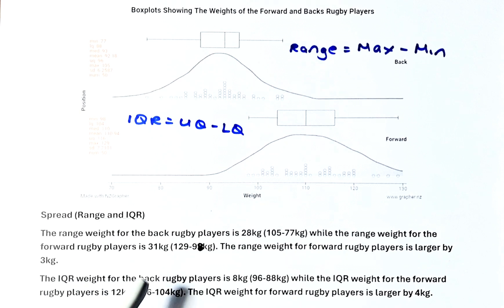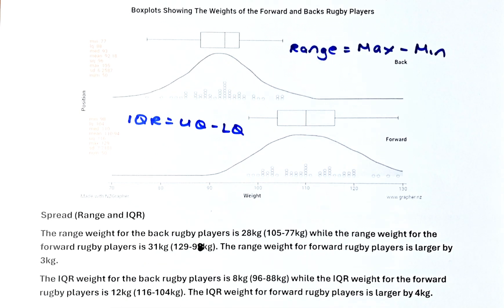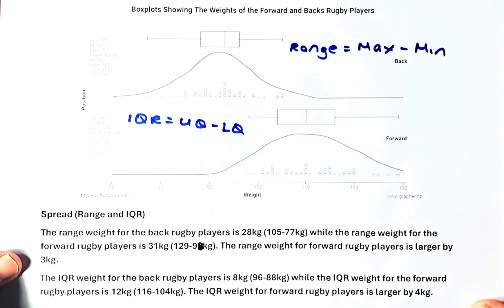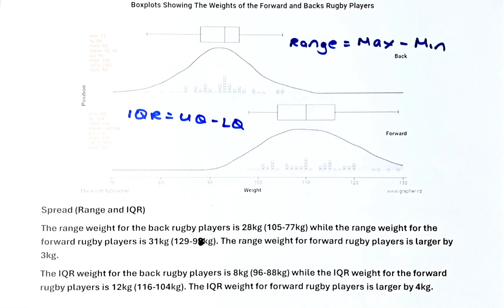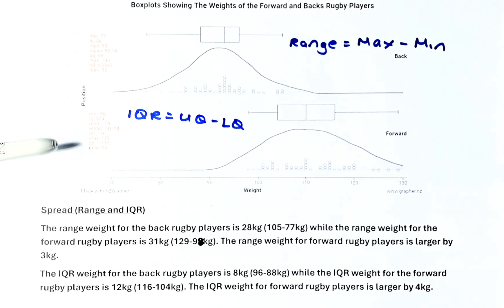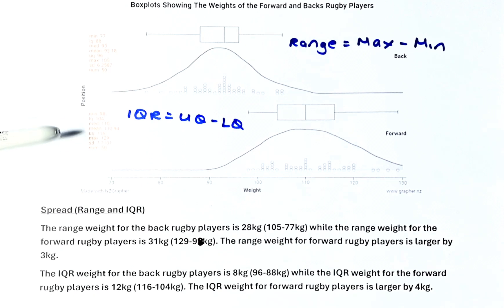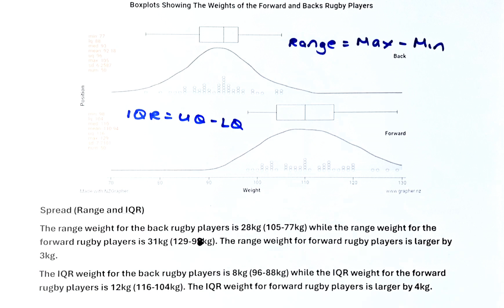The range weight for the forward rugby players is larger by 3 kg, because 31 is 3 more than 28. Now we're going to analyze the interquartile range. The IQR is the upper quartile minus the lower quartile. The upper quartile is 96 and lower quartile is 88 for backs, while the upper quartile for forwards is 116 and the lower quartile is 104.